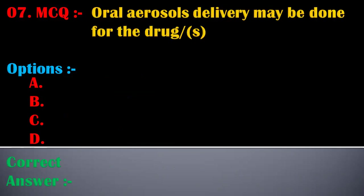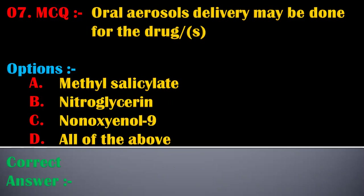The seventh MCQ is: oral aerosol delivery may be done for which drug? Options are: A) methyl salicylate, B) nitroglycerin, C) nonoxynol-9, D) all of the above. The correct answer is B, nitroglycerin. Oral aerosol delivery may be done for the drug nitroglycerin.